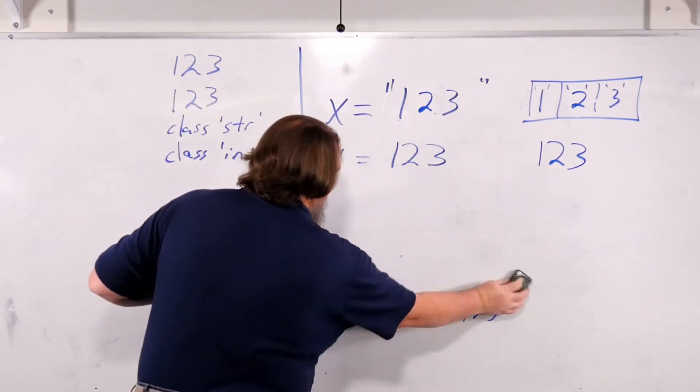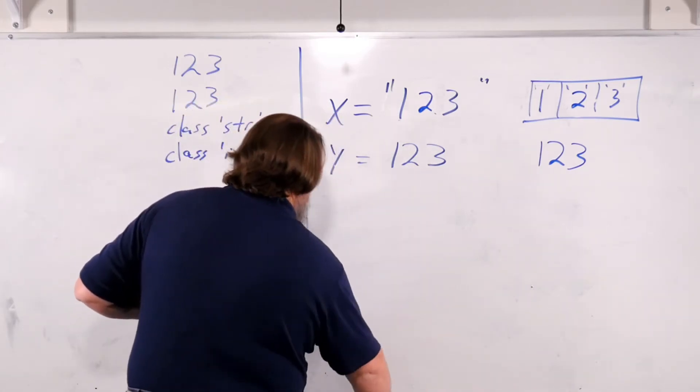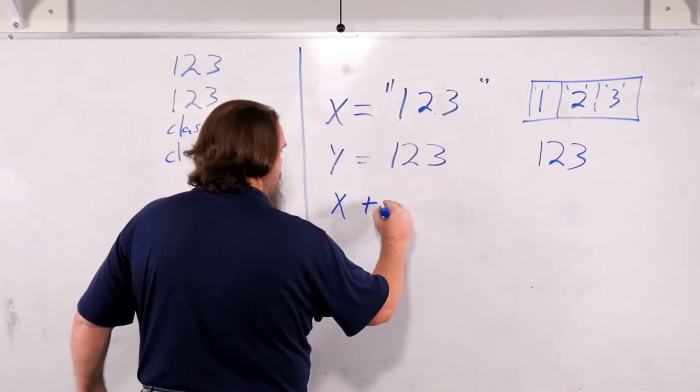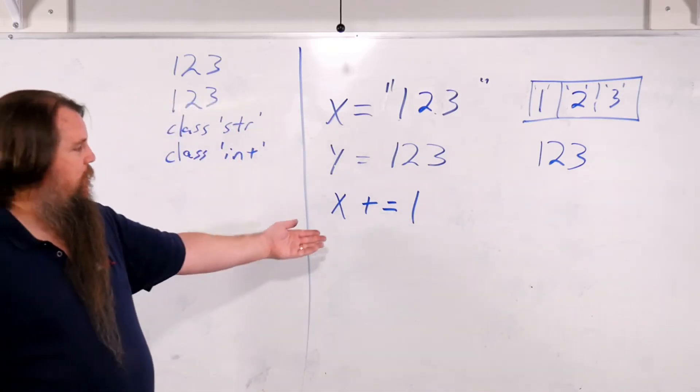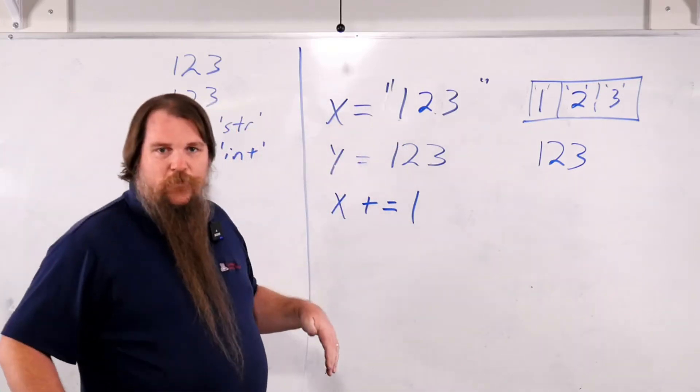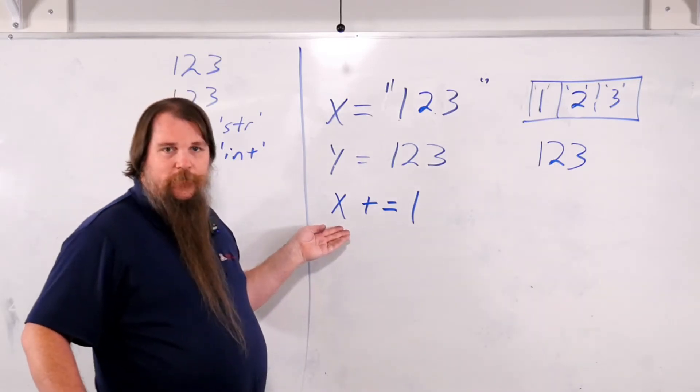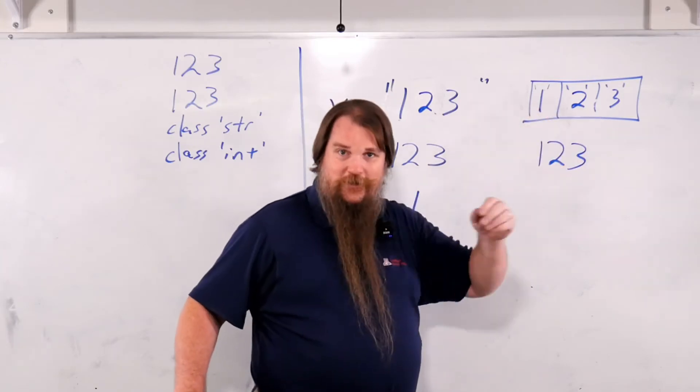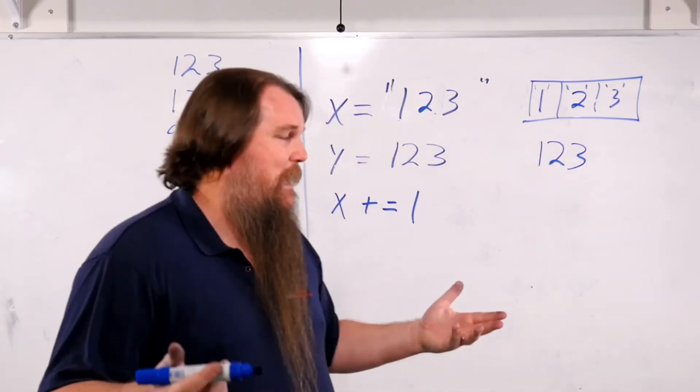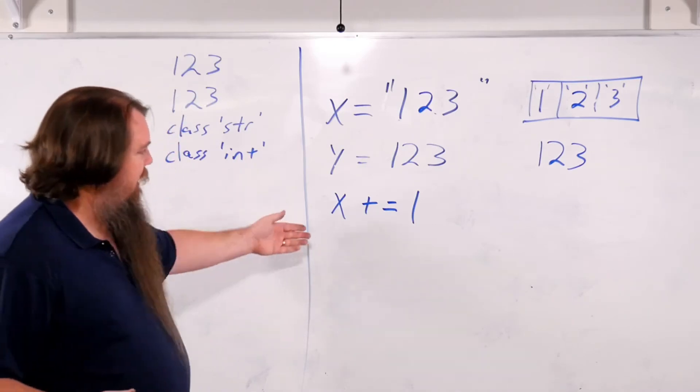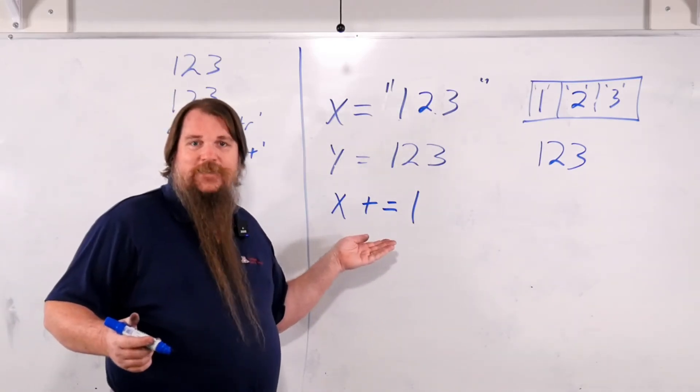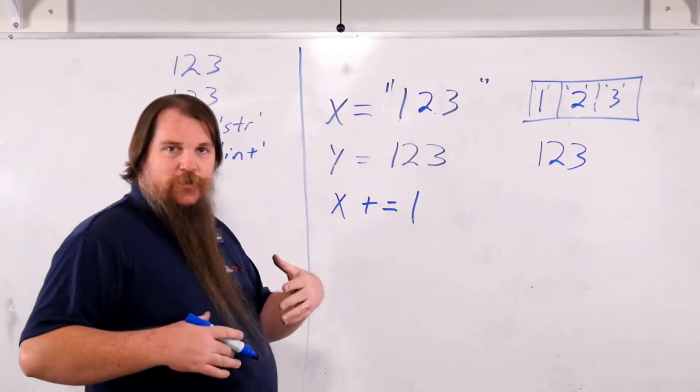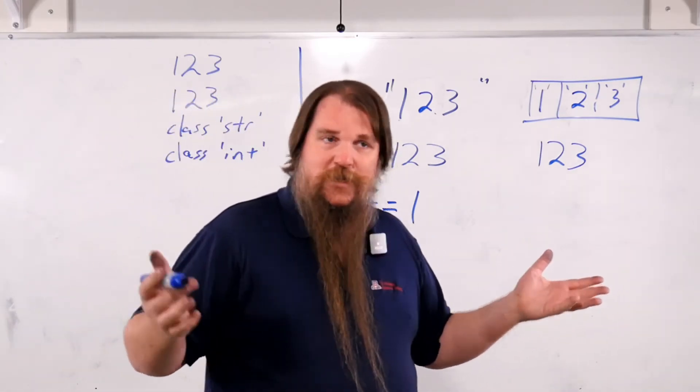What if we said x plus equals 1? We want to add 1 to this. Well that's a nonsense operation. Python does not know how to take a string of characters and add an integer to it. That doesn't make any sense at all. And so if you run this code you will actually get an exception. We'll talk about exceptions later in another video, but what you should know is that your program will crash. It's not going to work.